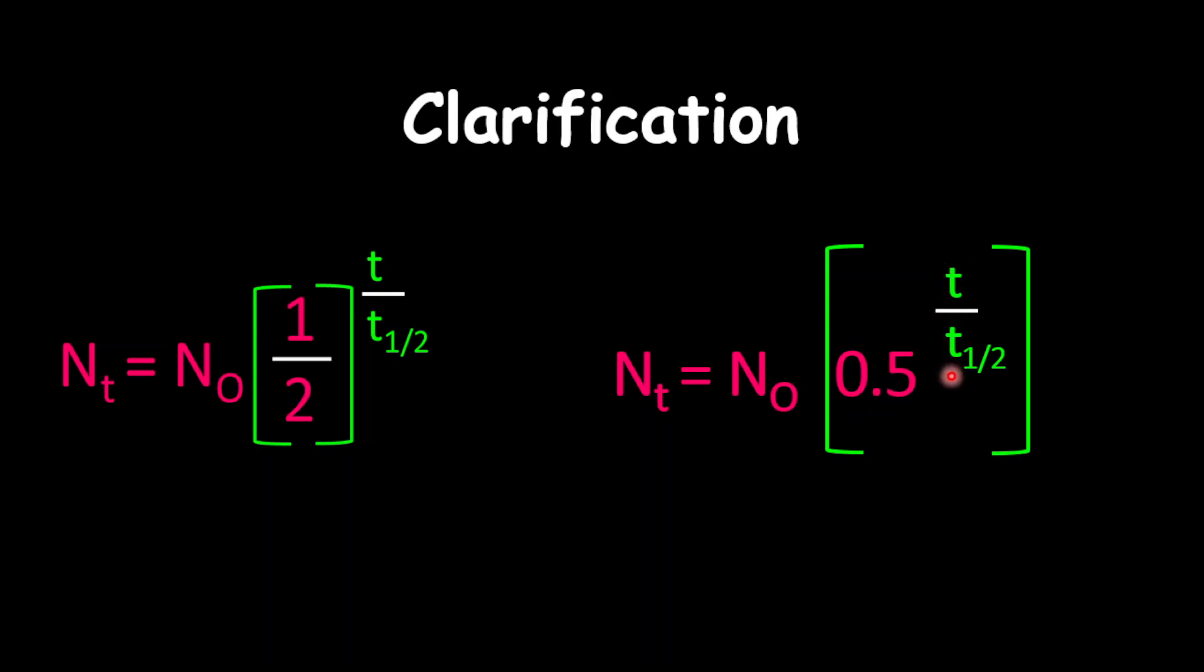And just to make note again, as we look at the original formula before, t divided by t½ is the number of half-lives. So, 0.5 to whatever the number of half-life is. And just write that out first, then multiply by the original number, and you will be good.